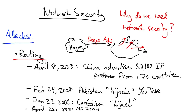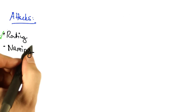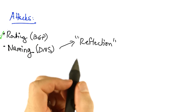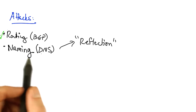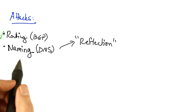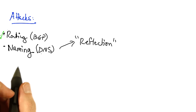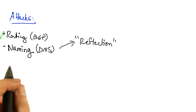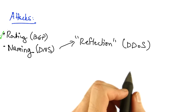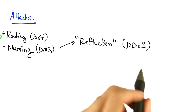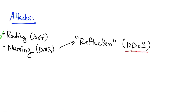So we've surveyed some famous, or shall we say notorious, attacks on internet routing. But another part of the infrastructure that's vulnerable is naming, or the DNS. One very popular and effective means of mounting an attack on the naming system is through something called reflection. DNS reflection is a way of generating very large amounts of traffic targeted at a victim, in an attack called a distributed denial of service, or DDoS attack.